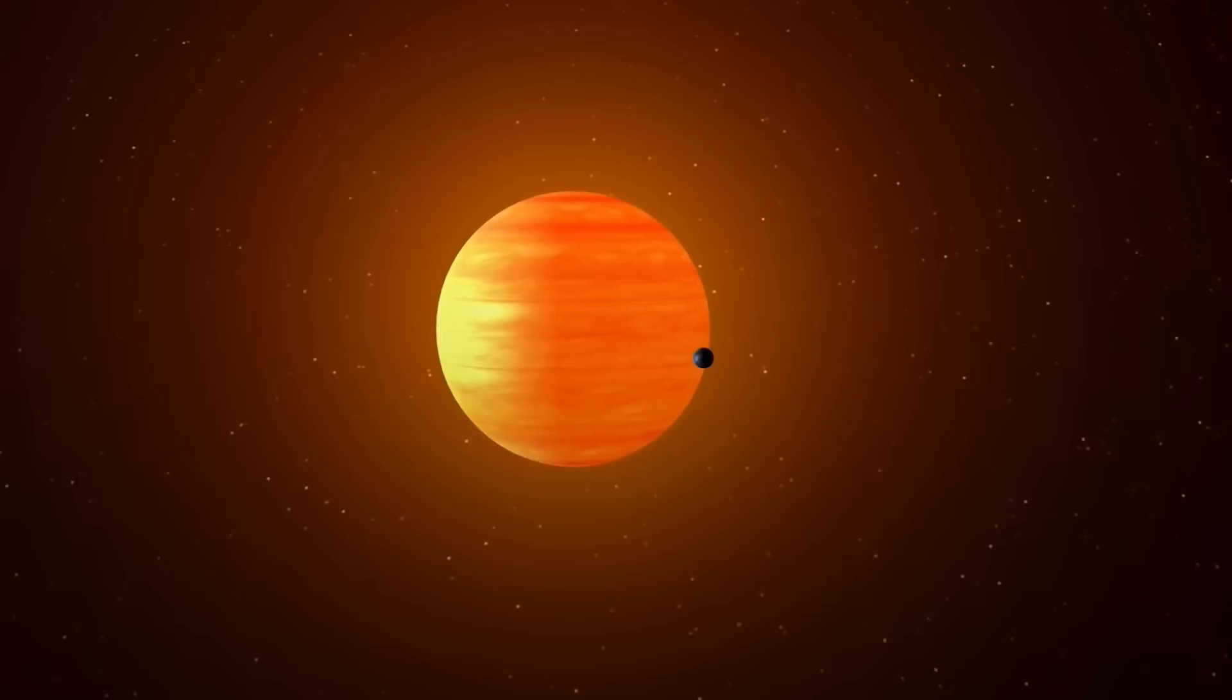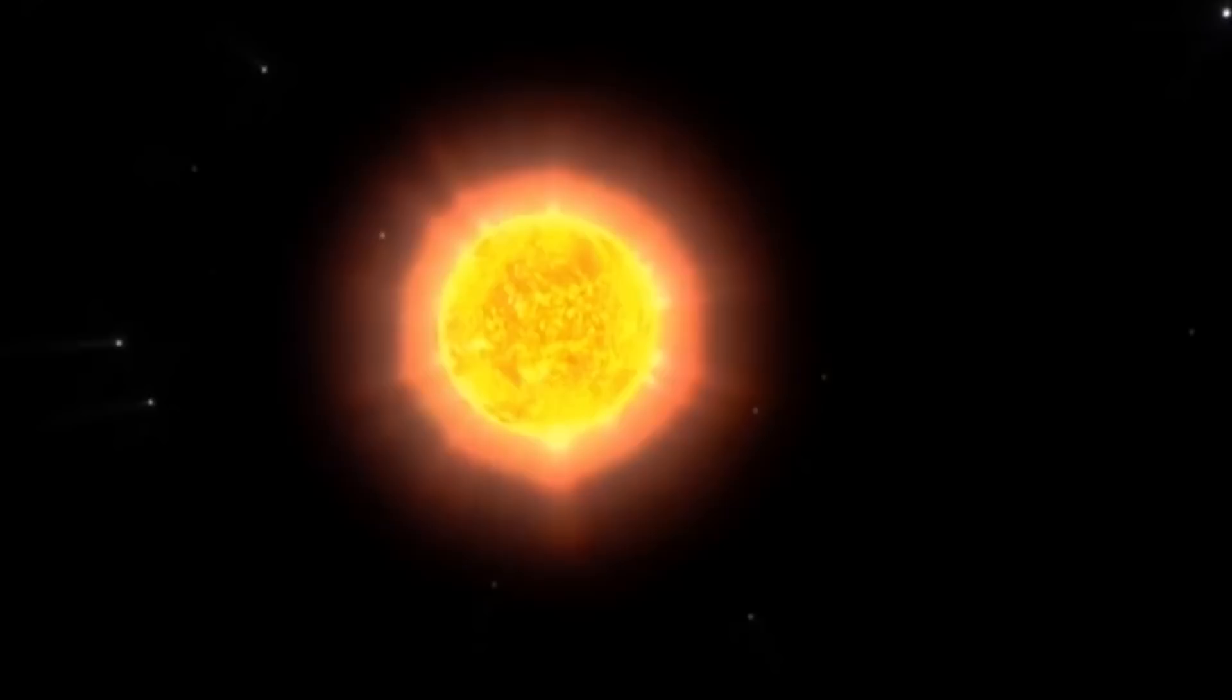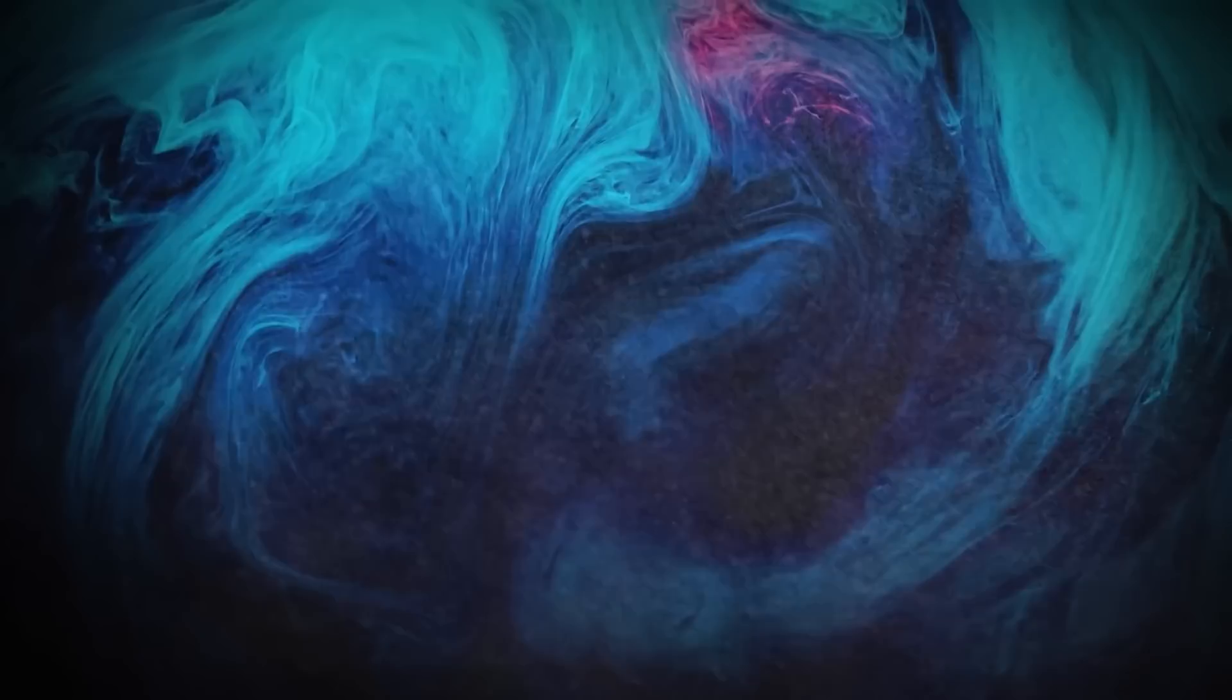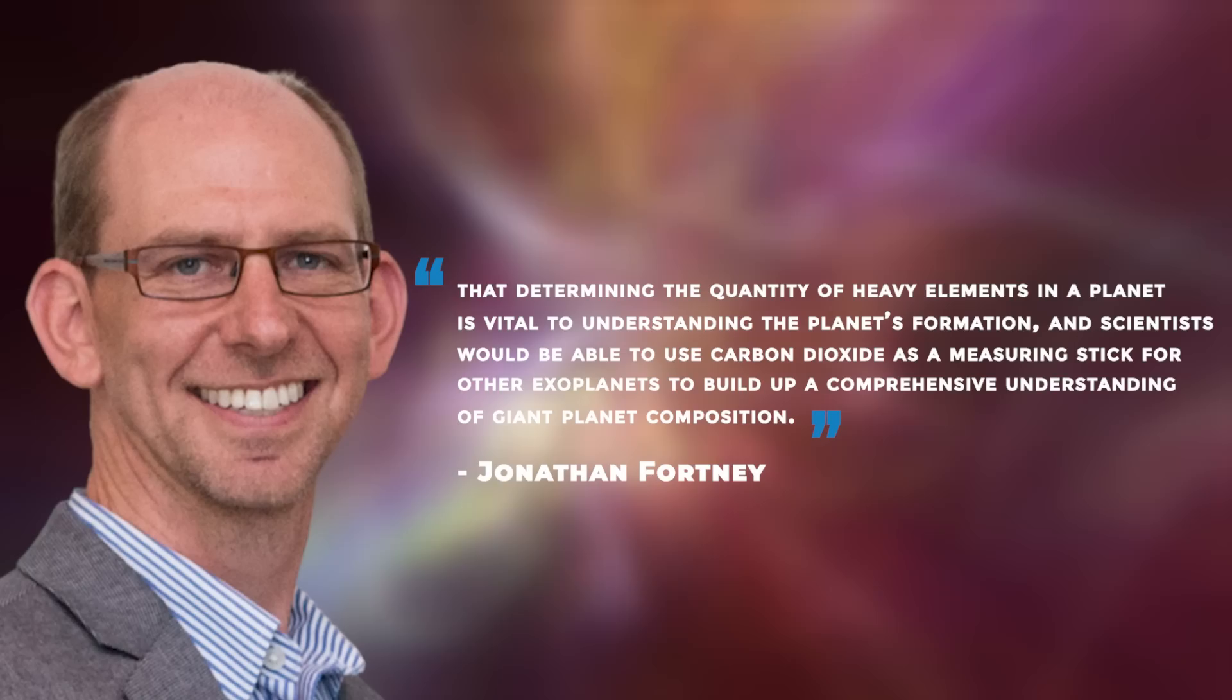Still, the abundant presence of heavier elements, what scientists call metallicity, is a critical factor in planet formation. Professor Jonathan Fortney stated that determining the quantity of heavy elements in a planet is vital to understanding the planet's formation, and scientists would be able to use carbon dioxide as a measuring stick for other exoplanets to build up a comprehensive understanding of giant planet composition.